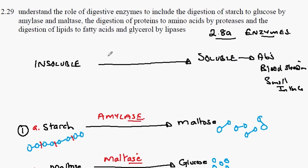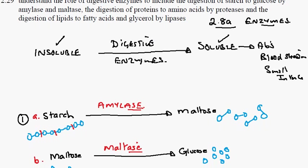So this is promoted by digestive enzymes. The insoluble food is the food we eat and the soluble molecules are those which go into our bloodstream and then are assimilated into our cells. There are three types of this process we should consider.